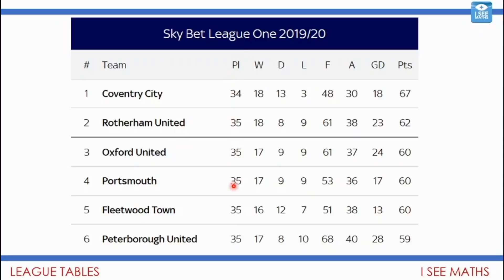The first column is the number of games each team has played so far. Coventry City, who are doing so well, have played 34 games. They've won 18 matches, drawn 13, and lost 3 — so W, D, L: won, drawn and lost. The F stands for goals for, the number of goals they've scored — in their 34 matches they've scored 48 goals. The A is the number of goals against, the number of goals that the other team scored against them, and that is 30.